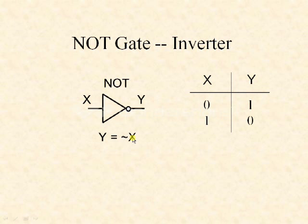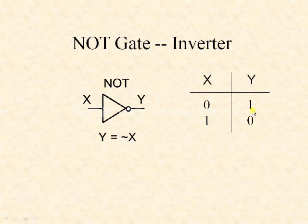On the right hand side you can see the truth table of the NOT gate, where x is the input and y is the output. If x is 0, then the output becomes 1. If x is 1, then the output becomes 0.